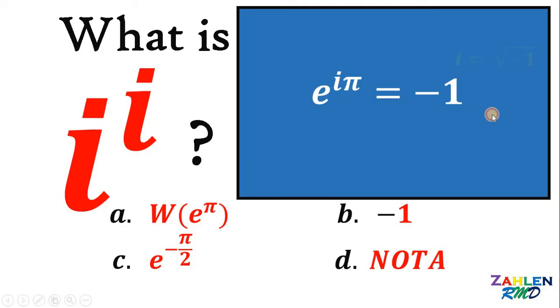Now, take note that i is equal to square root of negative 1. So, we have negative 1 on the right-hand side. Therefore, if we get the square root on both sides, we get an i on the right-hand side. Therefore, we have square root of e raised to iπ equals i.